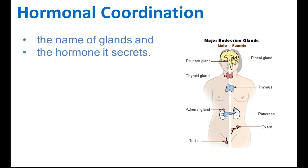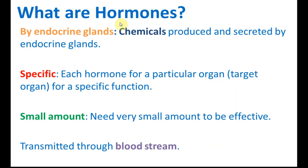You also need to know the functions of the hormones and what happens if there's not enough hormones. Hormones are chemicals produced and secreted by endocrine glands. Hormones are specific - each hormone only works on a particular organ, called the target organ, for specific functions. For example, insulin secreted by the pancreas has the function of controlling the blood sugar level in our body and can only do that.